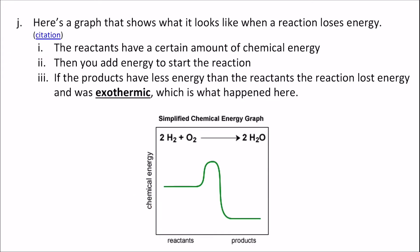Let's look at this graph. The reactants have a certain amount of chemical energy, just like we saw before. So here's our reactants. We have to put in a little energy to get things going, goes to the top here. And then we see here that the products are lower than the reactants. So if we compare, the reactants are higher, the products are lower, it lost energy. So if the products have less energy than the reactants, the reaction lost energy, and we call that exothermic. And that's what happened here.